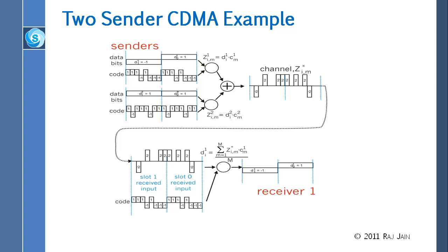In CDMA, everybody talks to their partner, but other people can listen too. The question is: why doesn't the receiver interpret the other sender's signal? You can put another receiver there as well, and just apply the same formula with the other sender's code, and they will get the correct result for that sender. The receiver and sender are paired and have agreed on a code. It doesn't have to be strictly paired — for example, two lectures going on in the same classroom: 60 people want to listen to one lecture and 60 to another — they could use CDMA, like one lecture in Chinese and one in English.